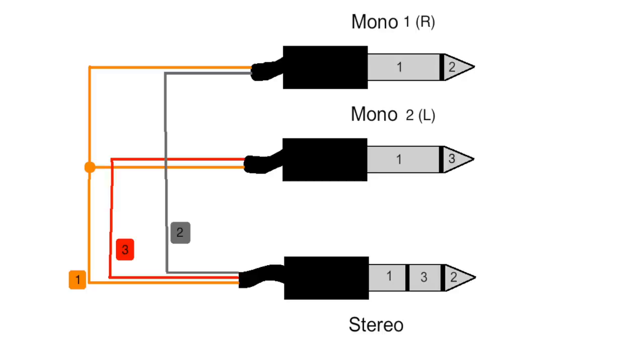Our right signal marked with number 2 of the stereo jack has to be connected with one of our mono jack tips. Number 3 has to be connected with the tip of the other mono jack.